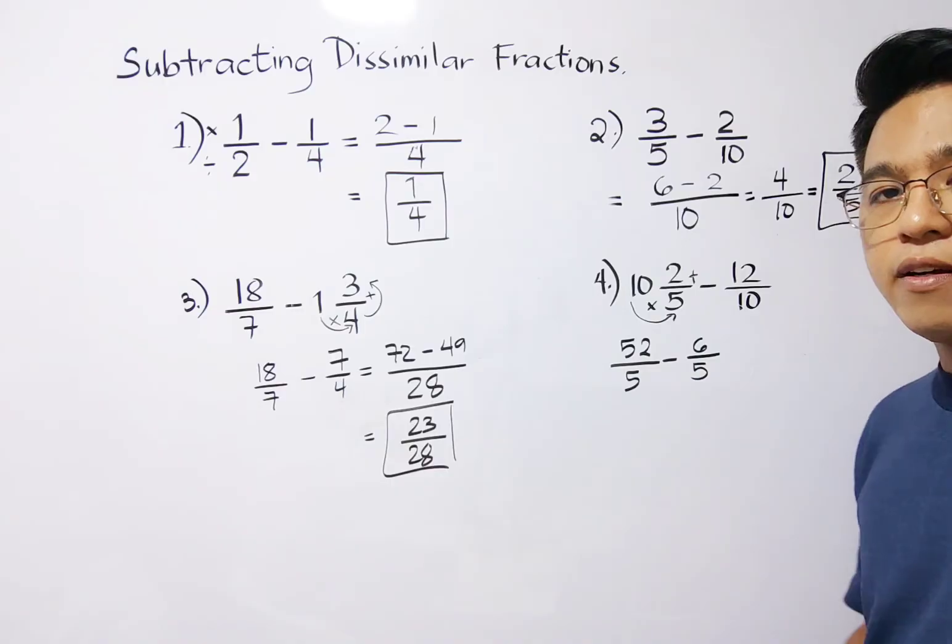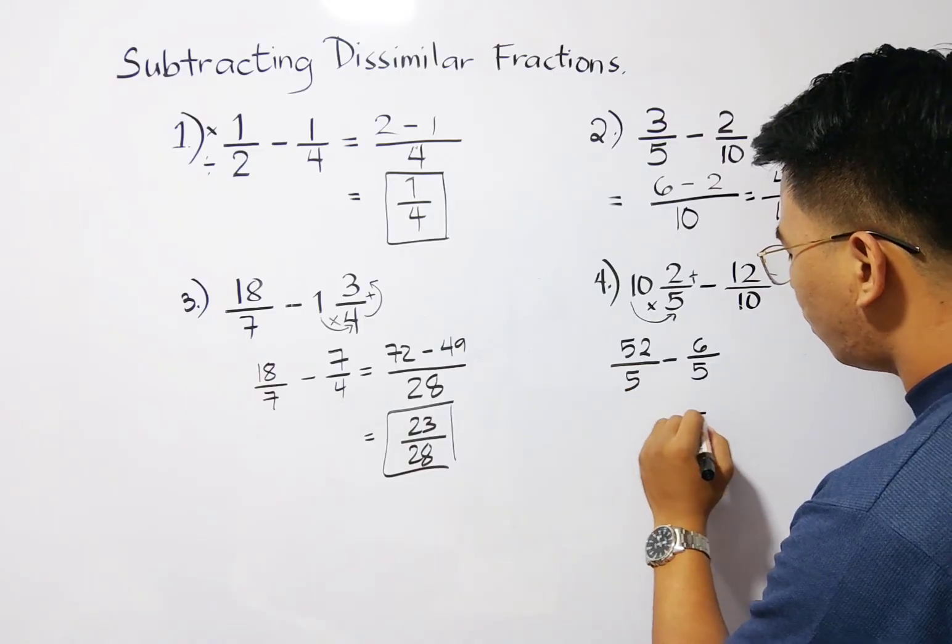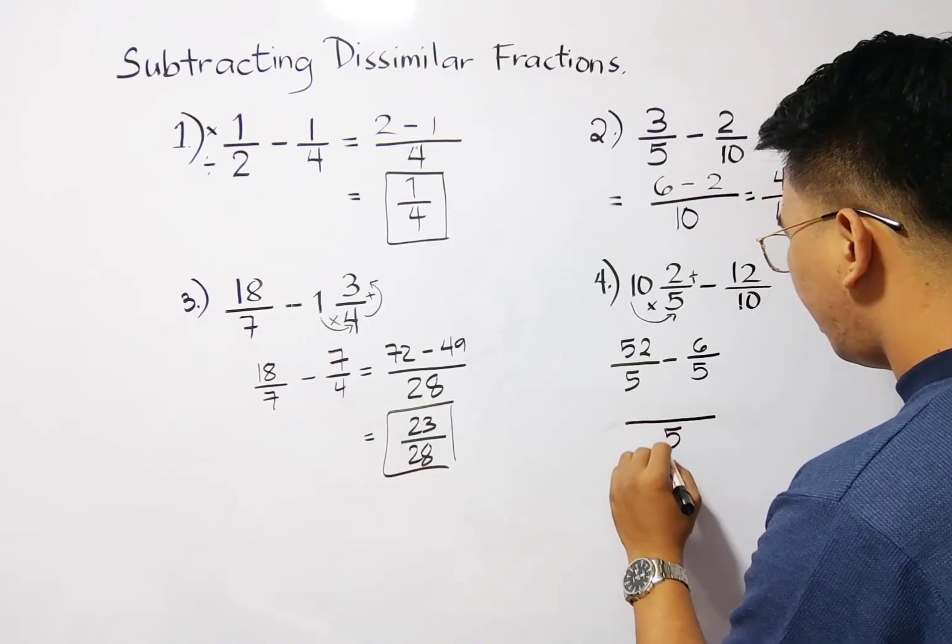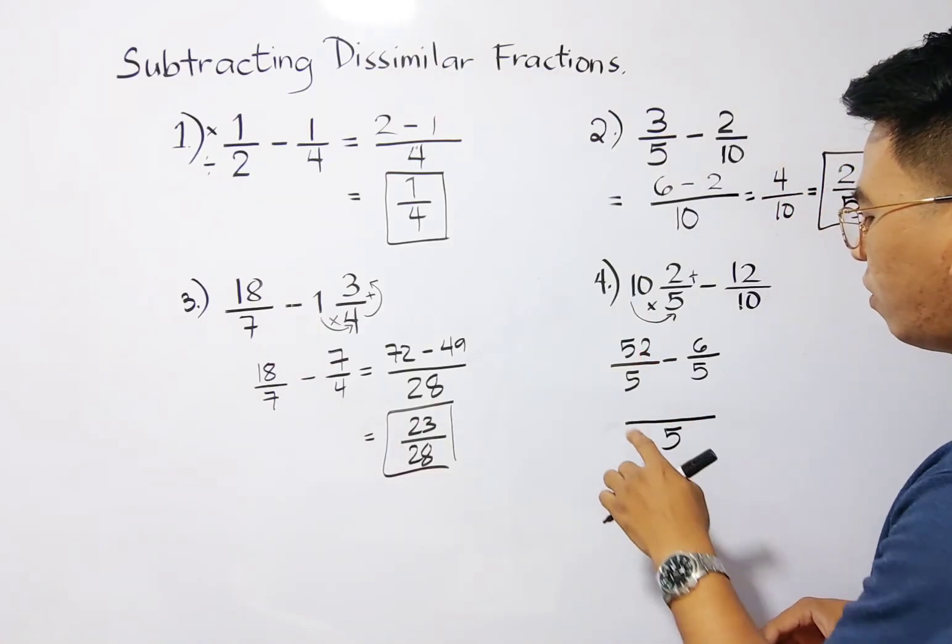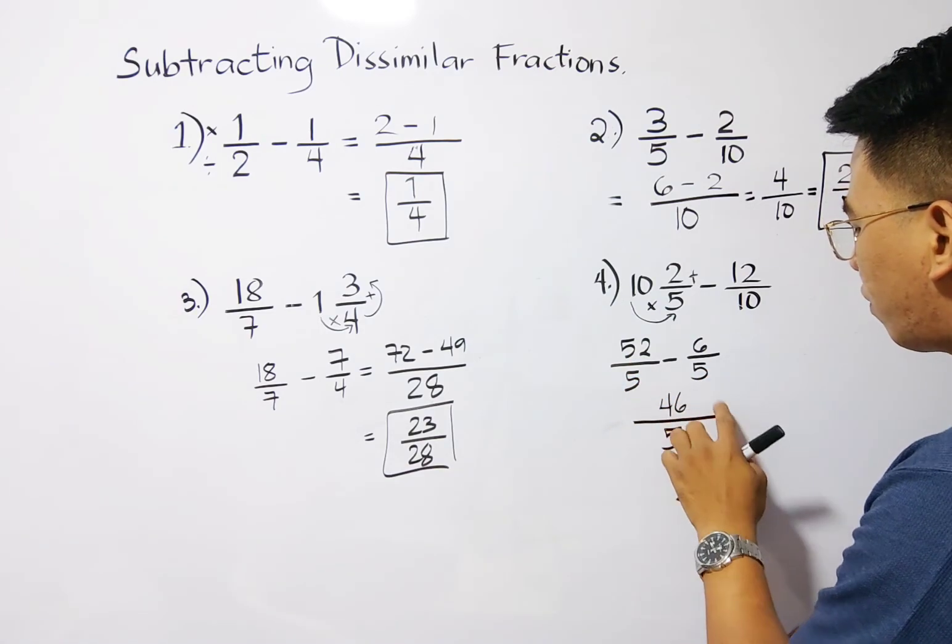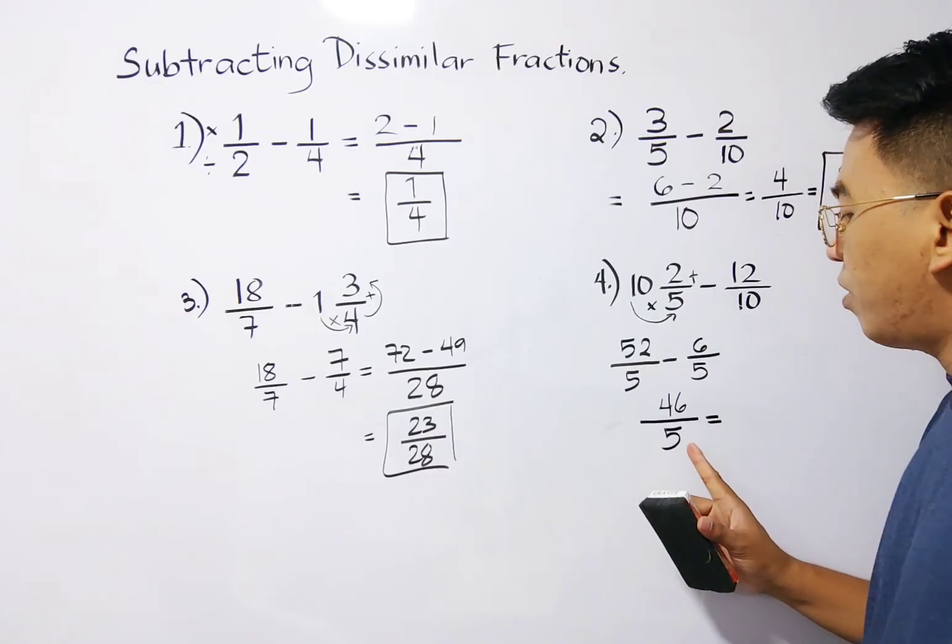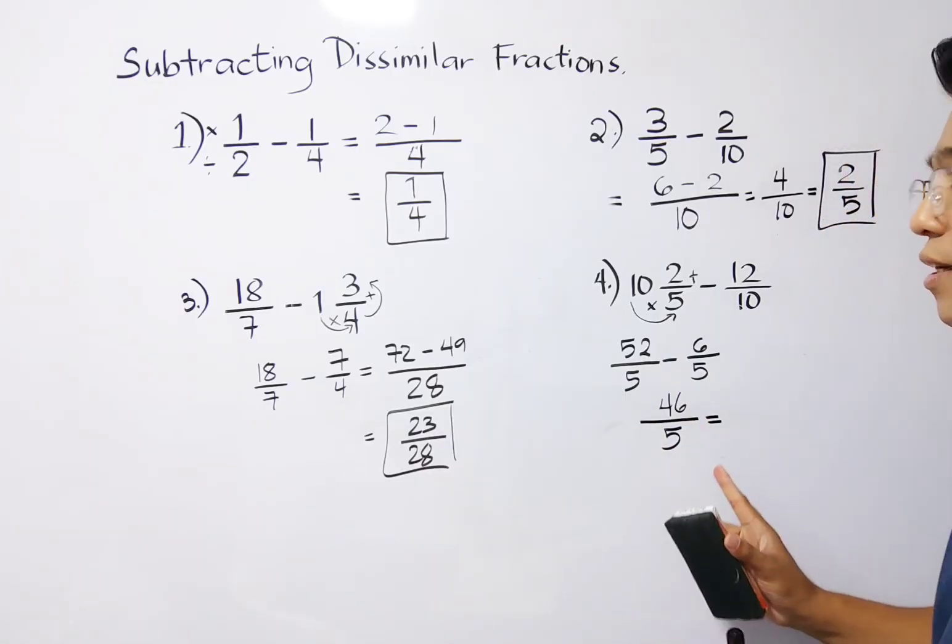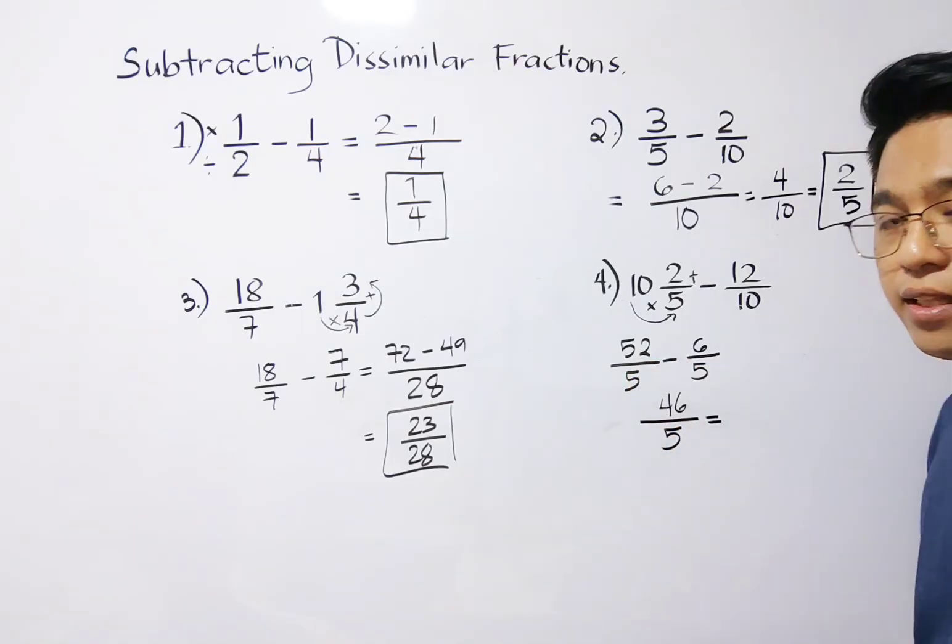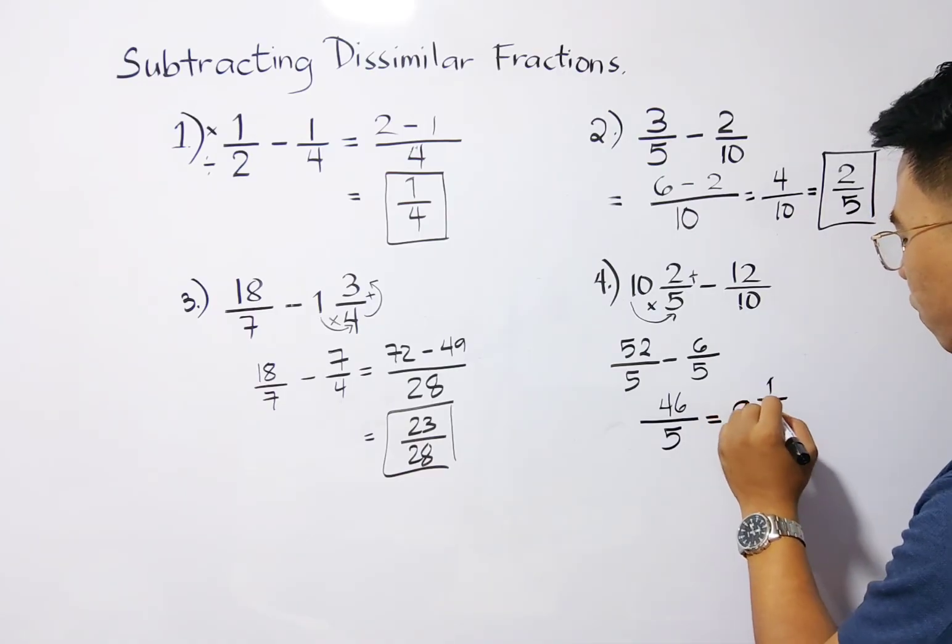And as you can see, we have here same denominator. So we can easily subtract them because all we need to do is to copy your denominator, which is 5, and subtract your numerator, which is 52 minus 6. That would give us the answer of 46 over 5. But in this case, we need to convert this into a mixed number. We know that this one is an improper fraction. Convert this into a mixed number. So what we need to do here is to divide this and the equivalent mixed number of this is 9 and 1 over 5.